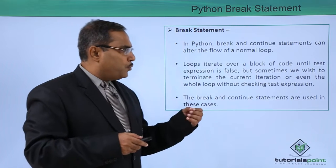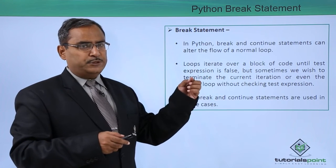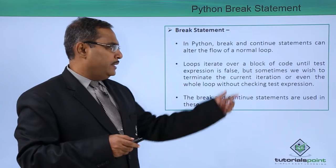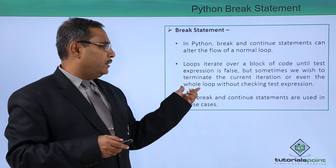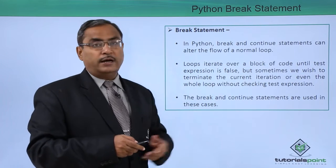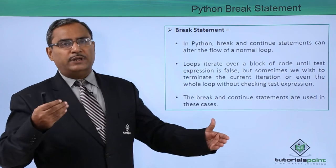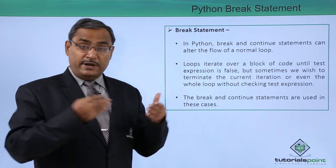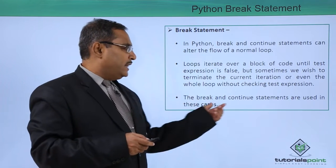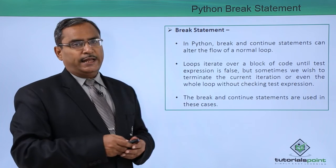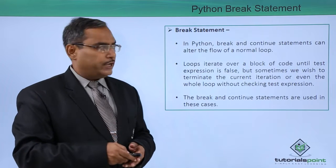The loops iterate over a block of code until test expression is false. Until the test expression is false, the loop will go on executing. But sometimes we wish to terminate the current iteration or even the whole loop without checking the test expression. If I want to alter the sequence, if I come out from the loop construct, even if the test expression is true, I can go for this break statement. The break and the continue statements are used in these cases whenever you are trying to alter the flow of control in a loop body.